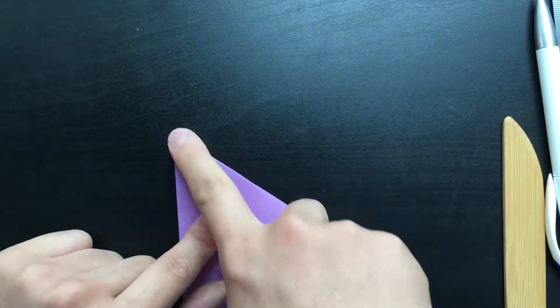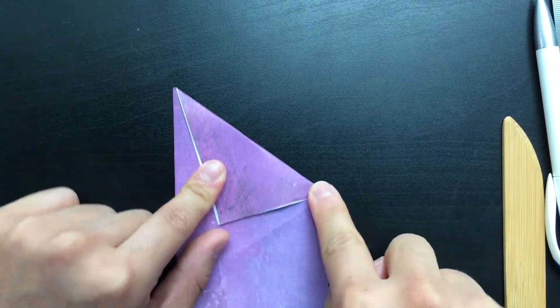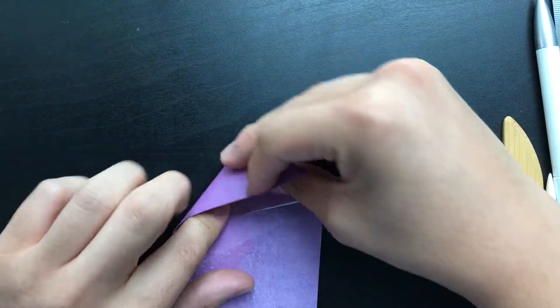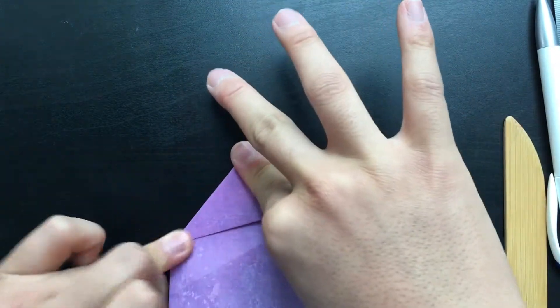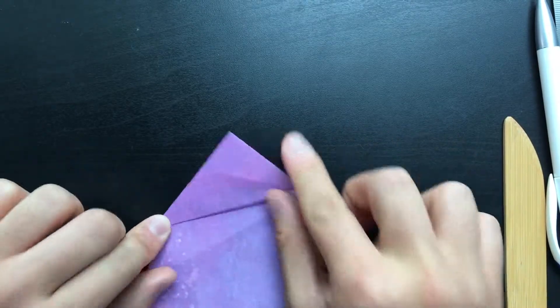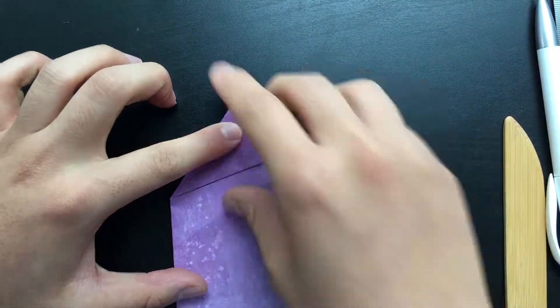Next, take the top corner and fold it down to the right side, like so. Then, take this triangle and fold it along its bottom edge, like so.